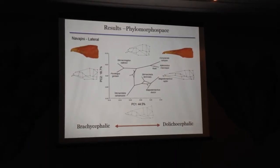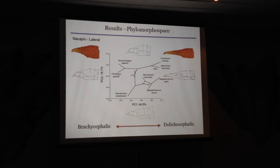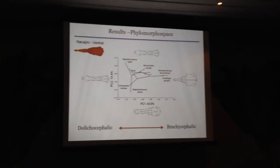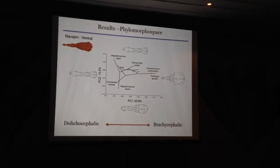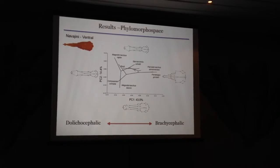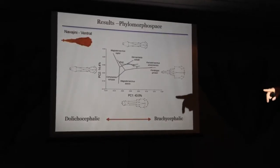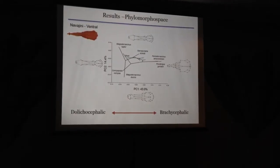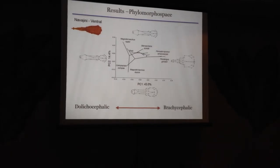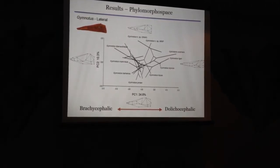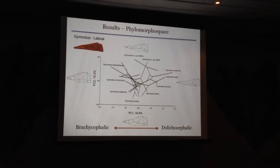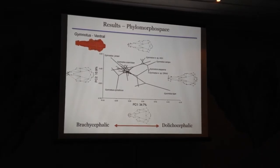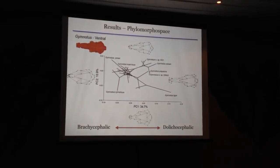Here is the phylomorphospace just of the Navahini, showing several different species with foreshortened skulls to the left and elongated skulls to the right. Here's the same analysis from ventral view. Notice, however, that the positive and negative directions don't really have any information related to the covariance matrix — what matters is that there is an axis. This is the lateral view of the skull phylomorphospace, with PC1 accounting for 35% of the variance, and ventral view about the same — which should be expected because it's the same skulls.